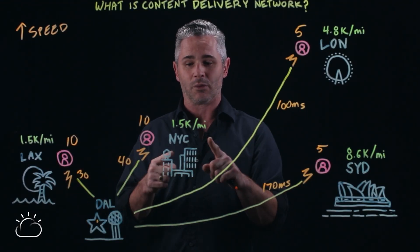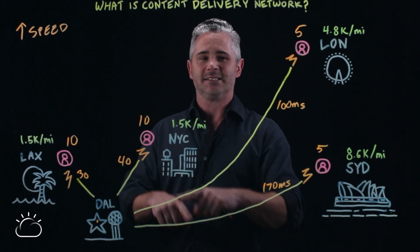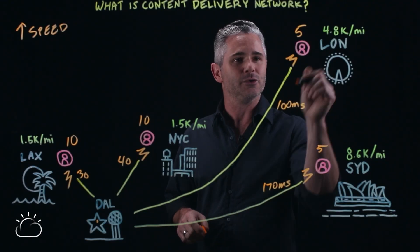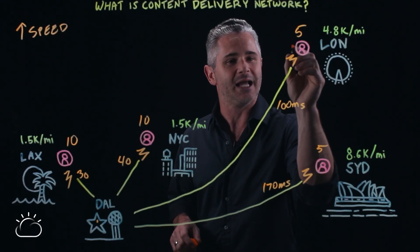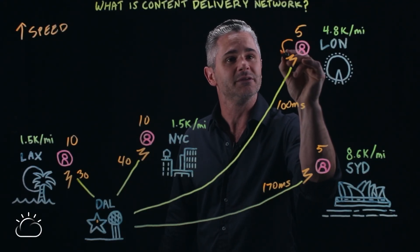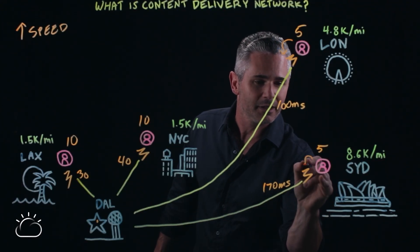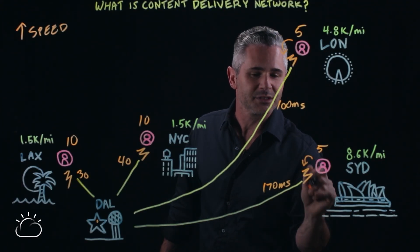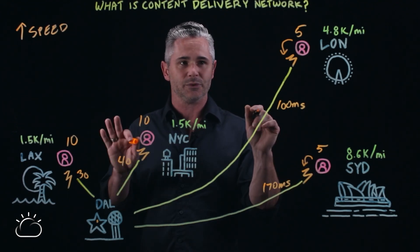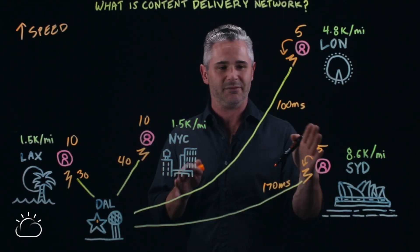We have a single request down to the Dallas server, which is then distributed all around the world. Our users in London, instead of going all the way to Dallas, are able to retrieve that content directly from their closest geographical location, drastically reducing the amount of time it takes to retrieve that content.